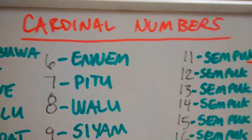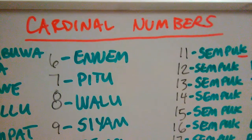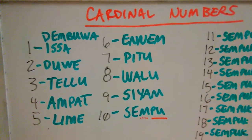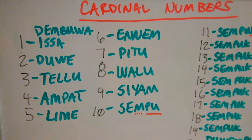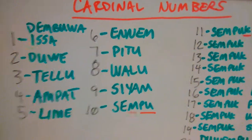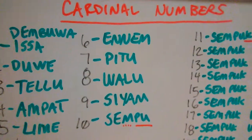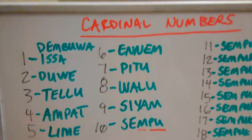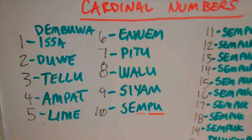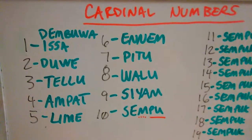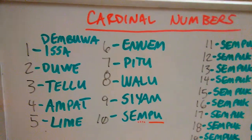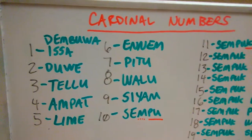Let's understand the cardinal number system of the Yakan language. Keep in mind that Yakan is more agglutinative than most other Philippine languages in the main islands. It's as agglutinative as Ilocano, which does a lot of agglutination with its language. Yakan does this a lot too.